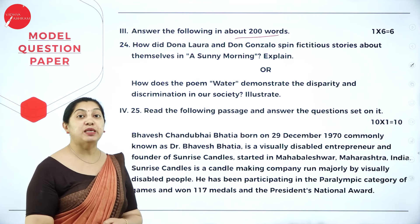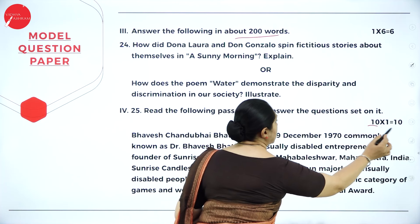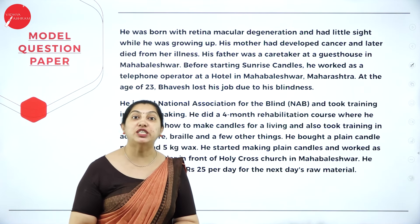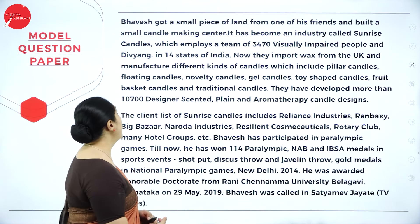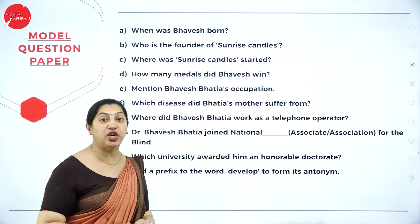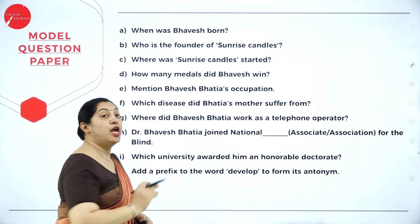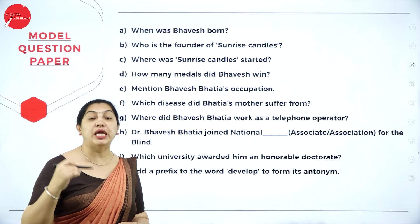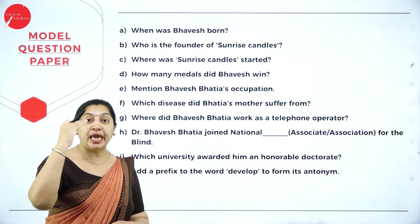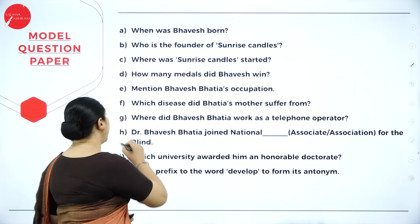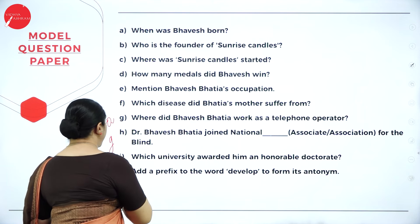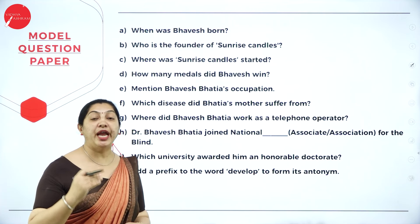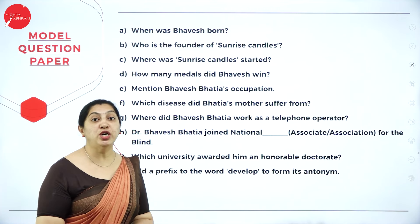Next is an unseen passage for 10 marks — question number 25. There are 10 questions labeled A to J. All 10 questions must be answered one below the other in sequence: A, B, C, D, E, F, and so on. You cannot write A, then G, then come back to B — that is wrong. All 10 questions from A to J must be in sequence for question number 25.